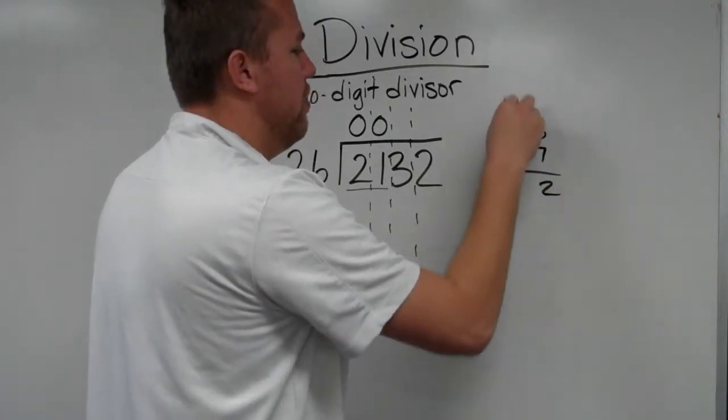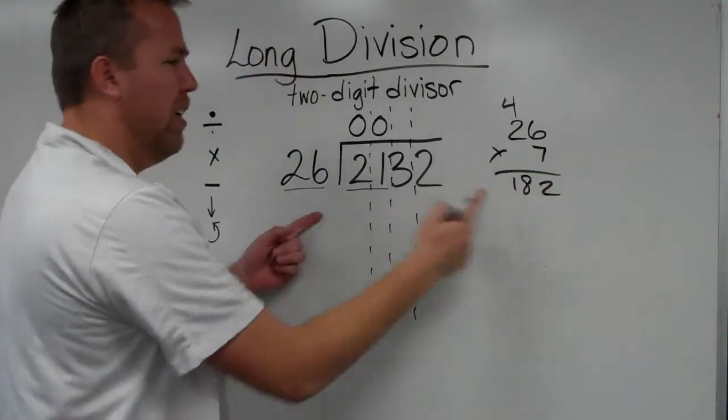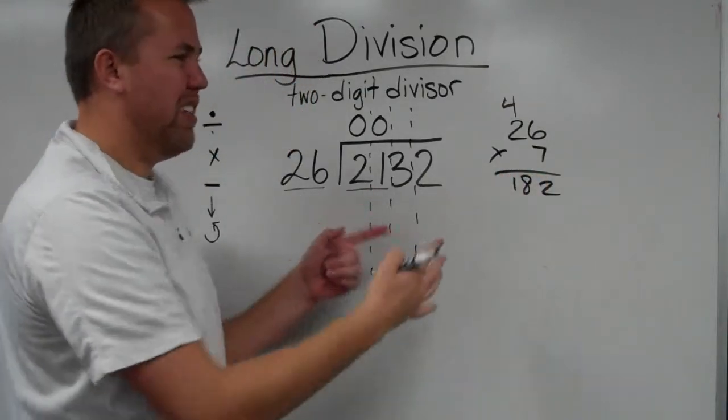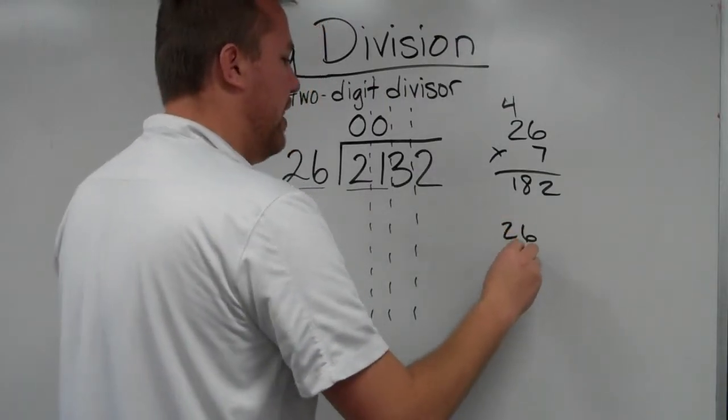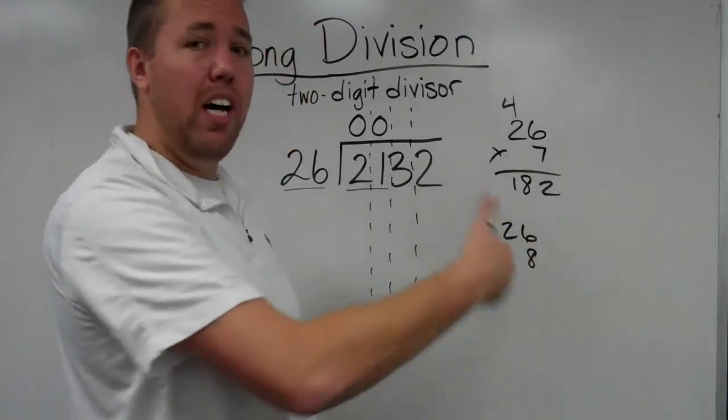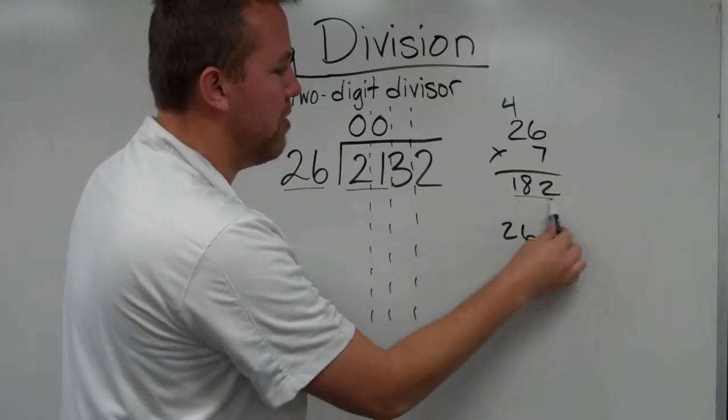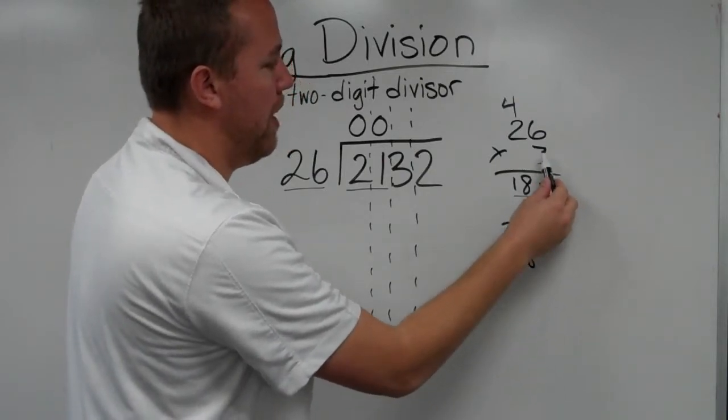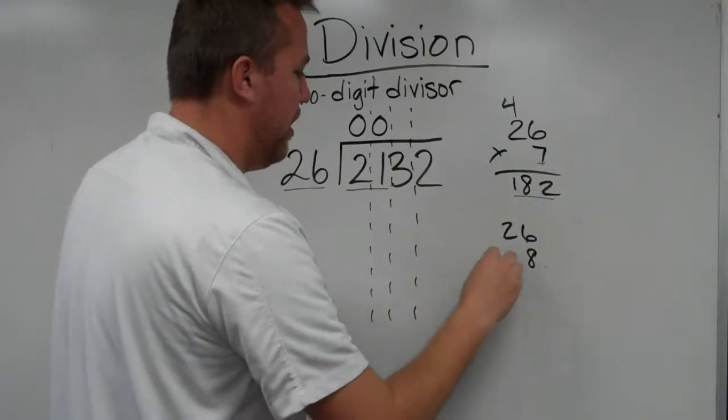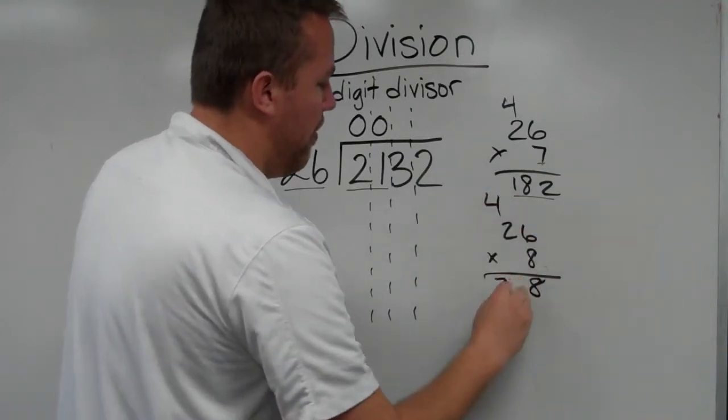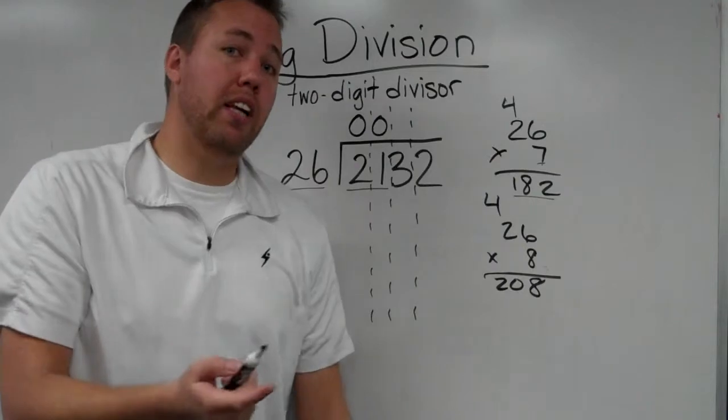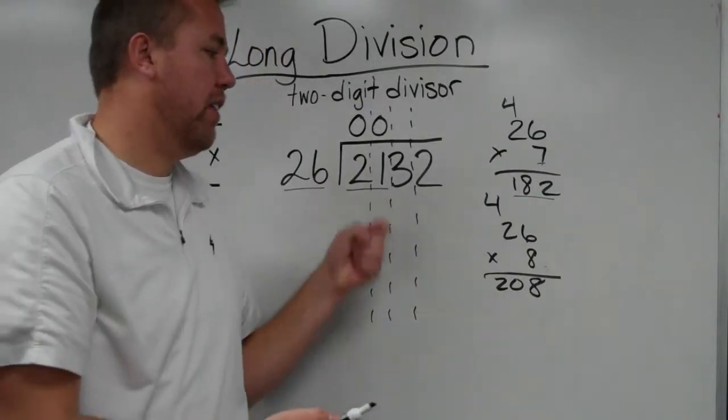And I get 182. 182, 213, not close enough for me. So I'm going to try 26 times 8. And I'm going up because this number is smaller, so I want to make this bigger to make our product bigger. 26 times 8. Now hey, that's really close to 213.